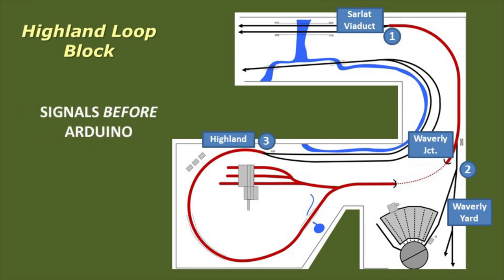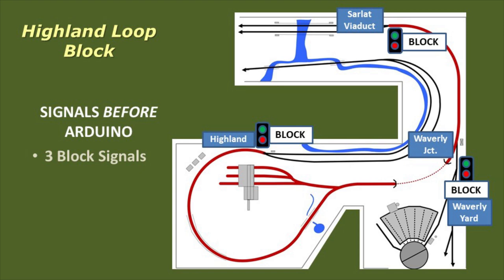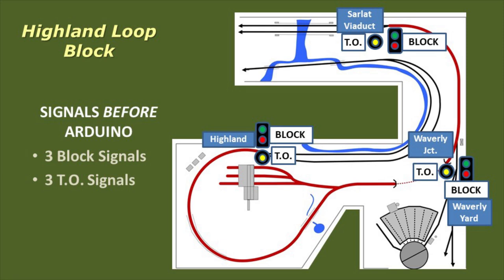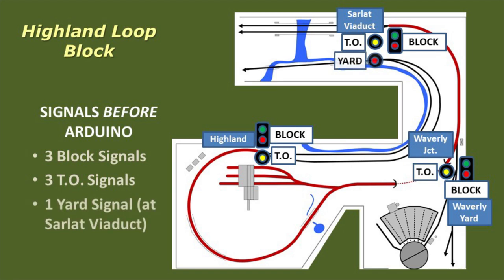The original signaling plan included a confusing array of seven signals: one block signal at each of the three entry-exit points, and dwarf signals at each entry-exit point indicating alignment of the turnout at Waverly Junction — whether aligned to the main line or to the yard — and an additional dwarf signal at Sarlott Viaduct.